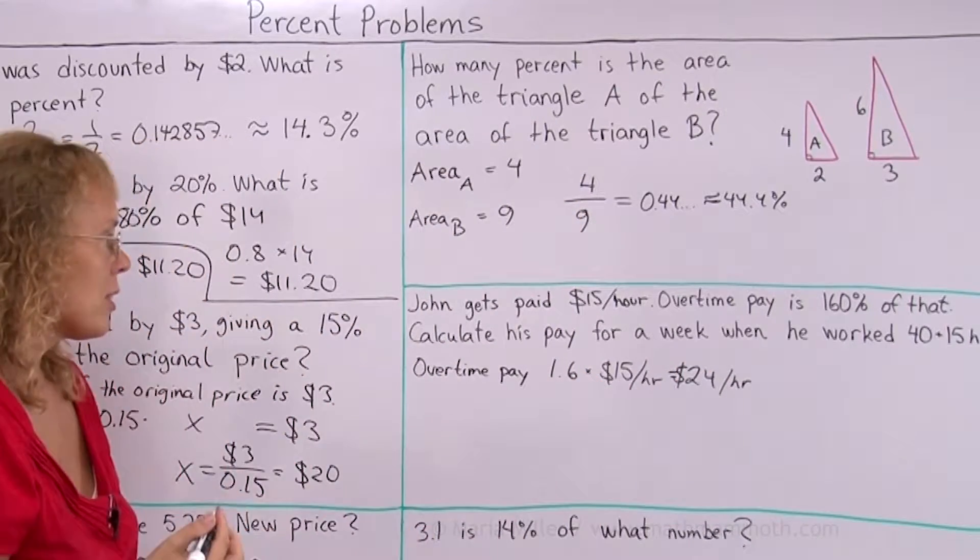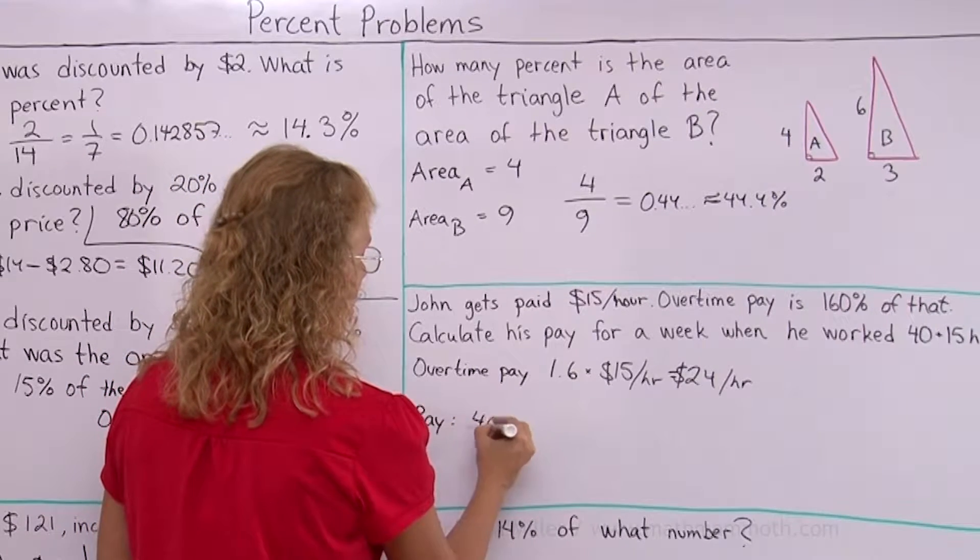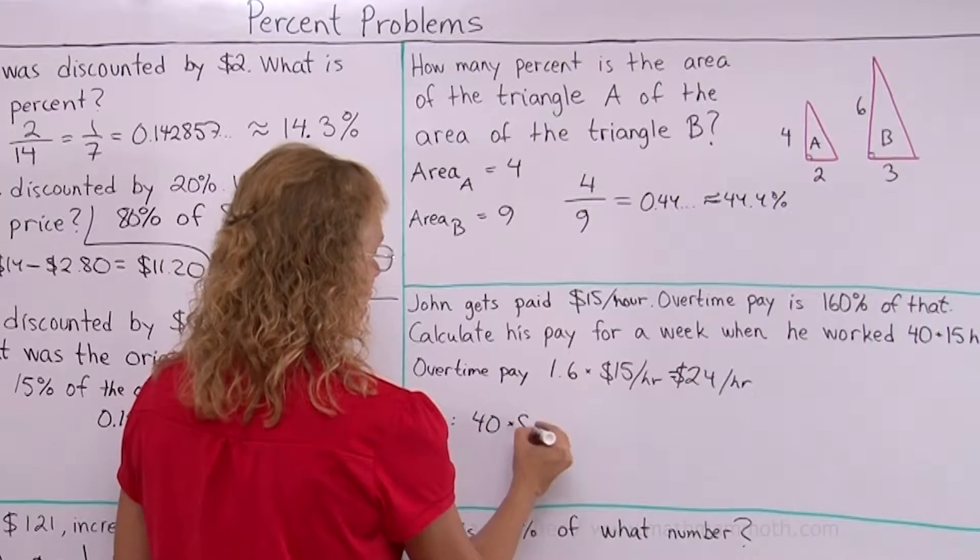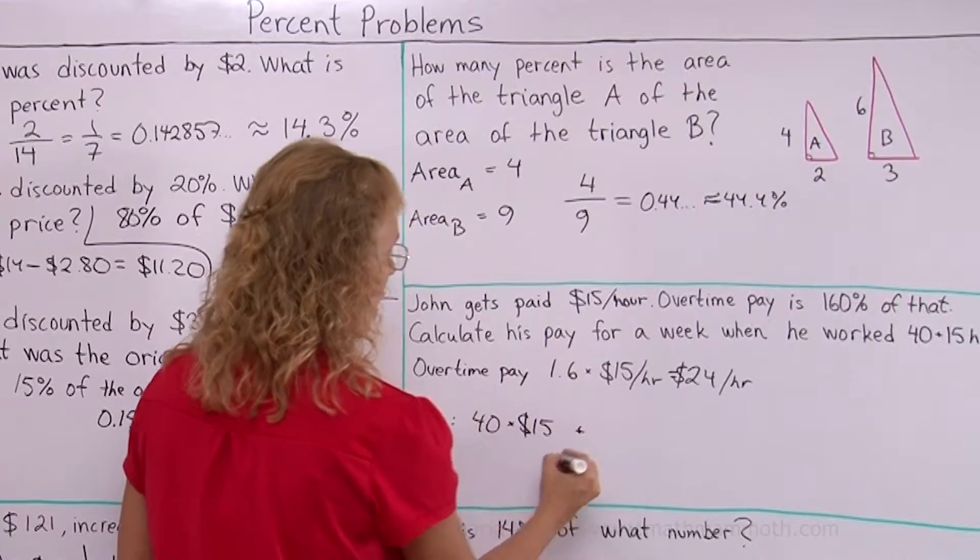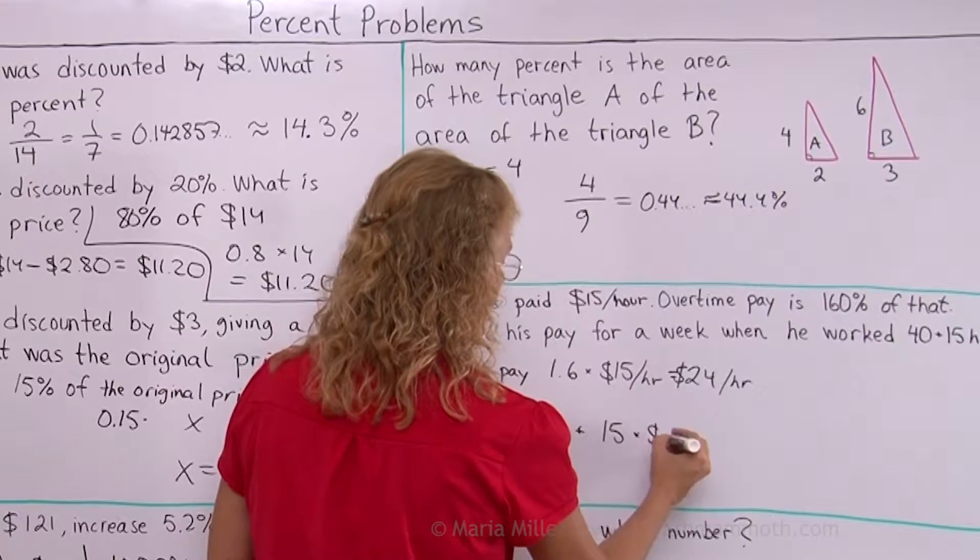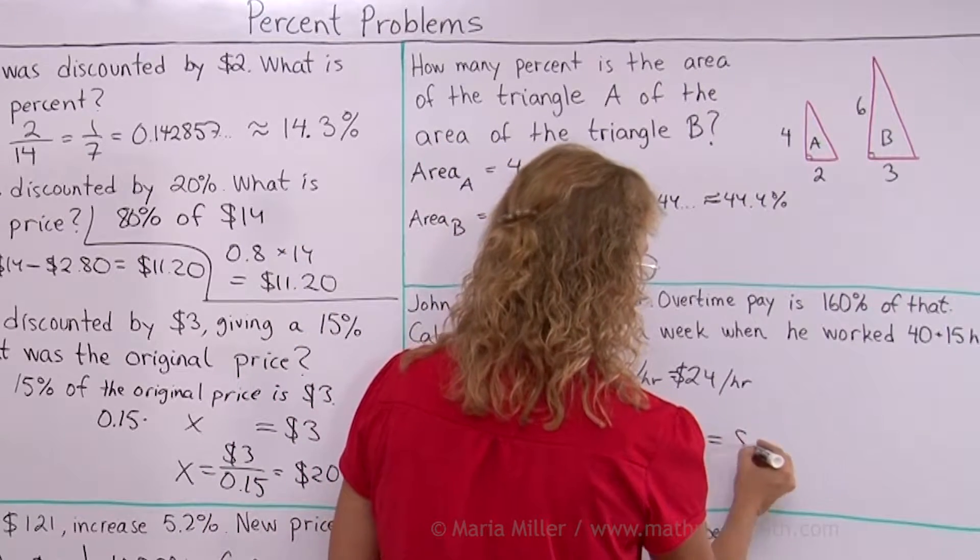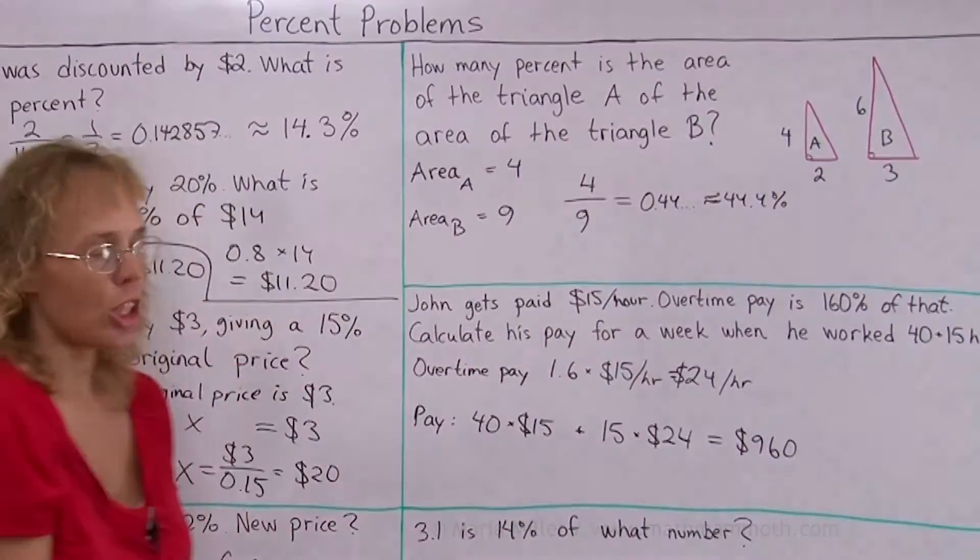Now it is pretty straightforward to calculate his pay. His pay will be 40 hours times 15 dollars. And then add to that 15 hours times 24 dollars. And I calculated it beforehand, so it is 960 dollars.